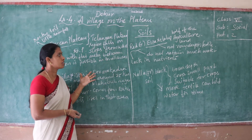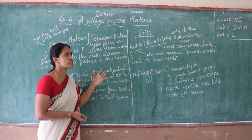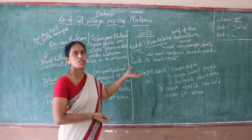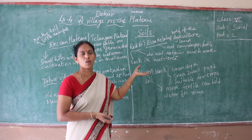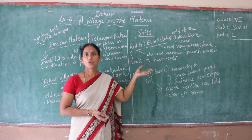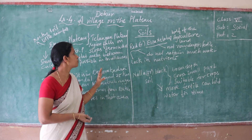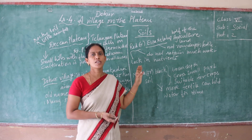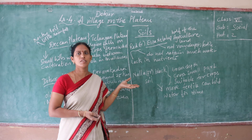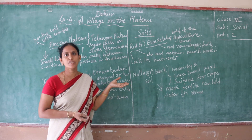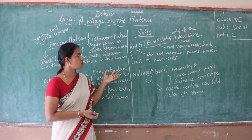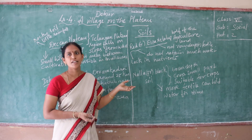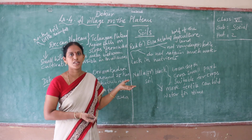Okay, children. In this class we studied about the soils of Dopur village. What you learned: which soils are found in Dopur village? Red soil and black soil. In the previous class I said about climate, rainfall, and the physical features.